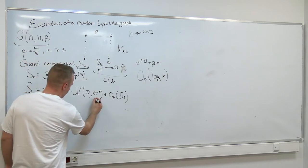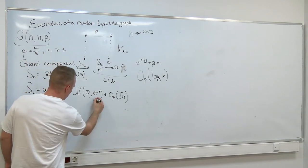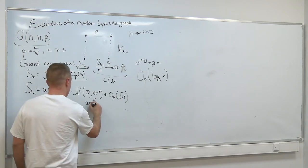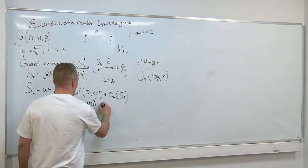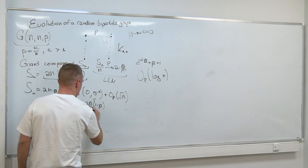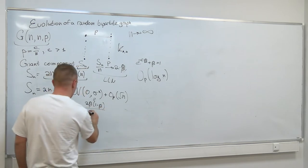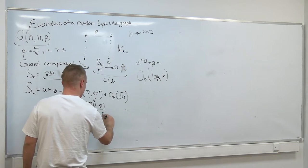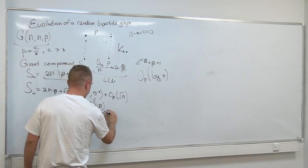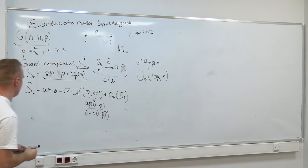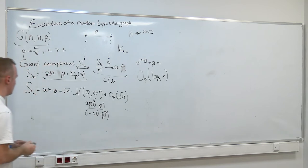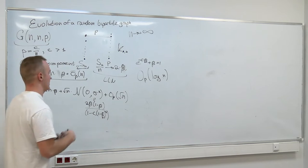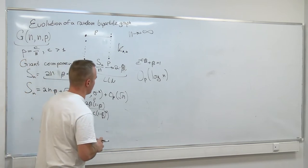Here sigma squared equals 2 beta times (1 minus beta) divided by C times (1 minus beta) squared. So it is actually something similar to the central limit theorem in the case of random variables.